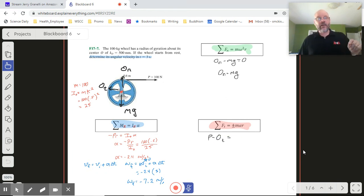Here we're going to have P minus O_t. And again, r is the distance from the rotation point to the center of mass, and again so we have zero. So O_t just has to be P.